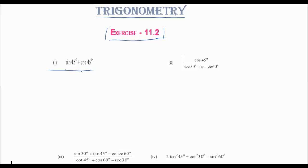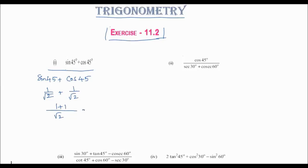First question: sin45 + cos45. sin45 = 1/√2 and cos45 = 1/√2. Taking LCM: (1+1)/√2 = 2/√2. Multiplying by √2/√2 gives 2√2/2, and cancelling gives √2. So the first answer is √2.